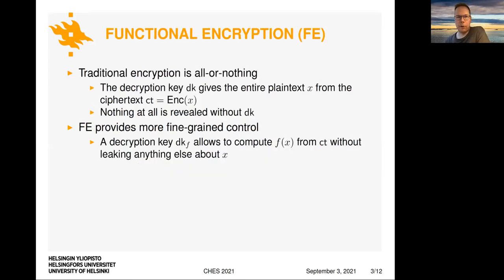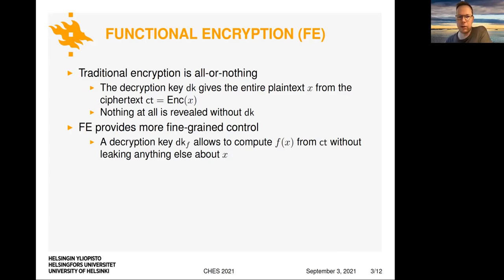So what is functional encryption? If you think about traditional encryption, it's all or nothing in the sense that whoever has the decryption key gets access to the full plaintext and sees it entirely after decrypting the ciphertext. If you don't have this decryption key, you get nothing at all — or maybe you know something about the length of the message, but actually the contents are completely hidden from you.